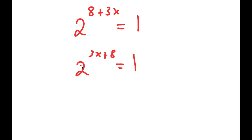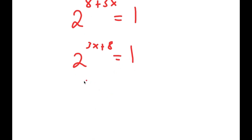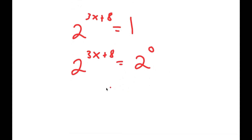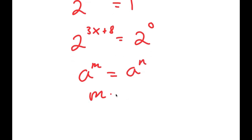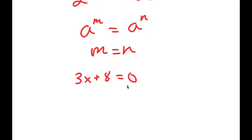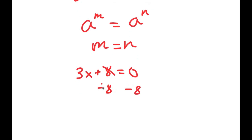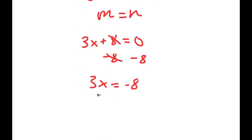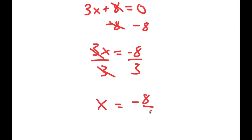Now, 2 to the power of what number equals 1? That's 2 to the power of 0. So I can write 2^(3x+8) = 2^0. Since the bases are equal, the exponents must be equal: 3x + 8 = 0. Subtracting 8 from both sides gives 3x = -8, and dividing both sides by 3 gives x = -8/3.